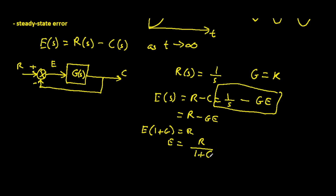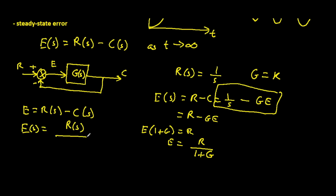This is the equation for error at any point in time — not necessarily steady-state error, but the equation for error. We now have two equations: error is given as R of S minus C of S, or equivalently R of S divided by 1 plus G of S. I will now plug in the values for this particular example where R is 1 over S and G equals K, giving us 1 over S over 1 plus K, which simplifies to 1 over (1 plus K) times 1 over S.